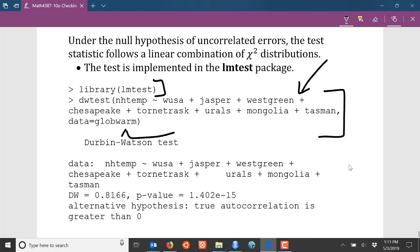I tell it the data set, the data frame where the data are located, and then it produces the relevant output here. The scale of the Durbin-Watson statistic probably doesn't mean anything to you, but the p-value here is pretty close to zero.